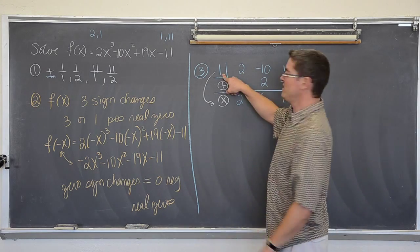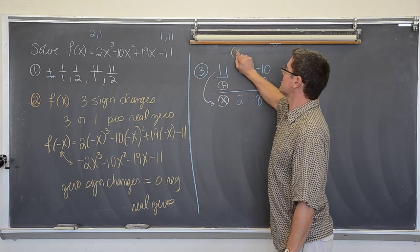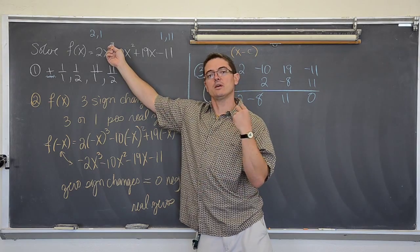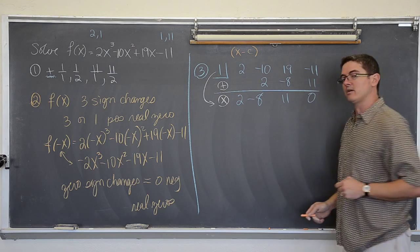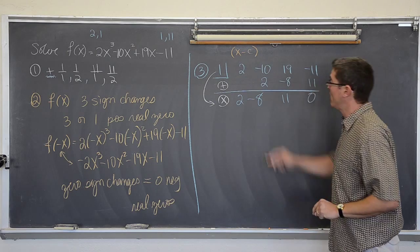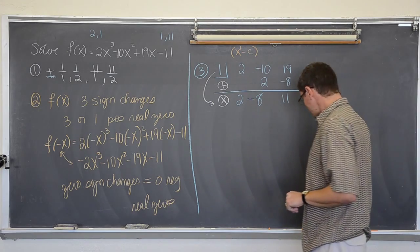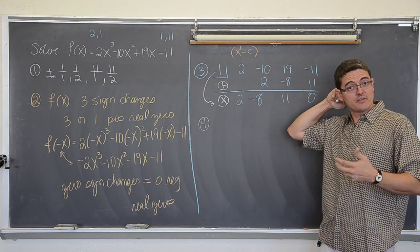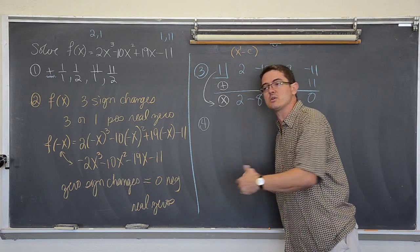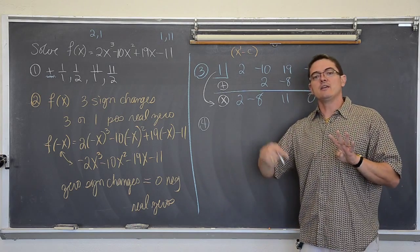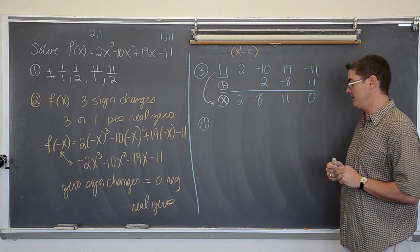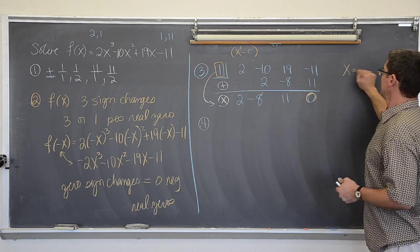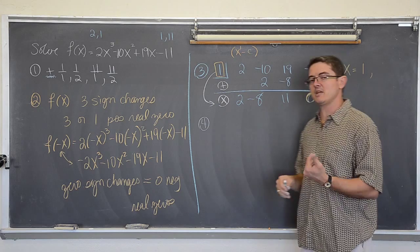Don't forget that when you do synthetic division you are dividing by the form of x minus c. We divided a degree of one into a degree of three, meaning that these numbers down here are now going to be a second degree. You reduce the degree by one. This one now has been validated as one of the solutions. So x is equal to one. That graph is going to cross the x-axis at one.